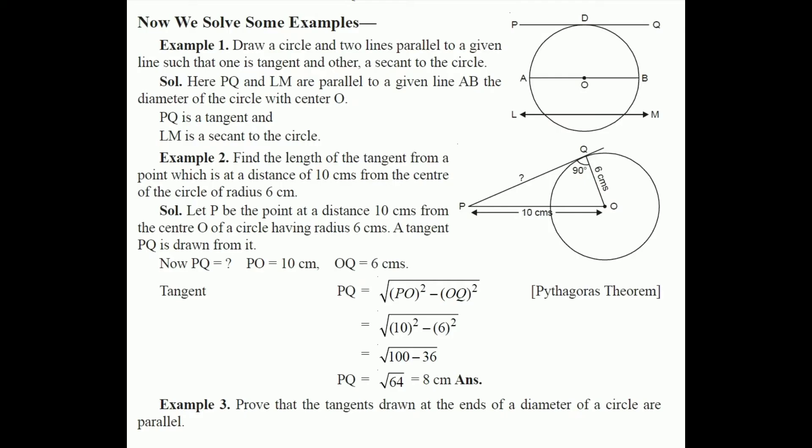Example 1: Draw a circle and two lines parallel to a given line such that one is a tangent and the other is a secant to the circle. We take a circle with center O and diameter AB. We draw a line PQ passing through point D, parallel to diameter AB, and passing through the inside of the circle — making it a secant line.